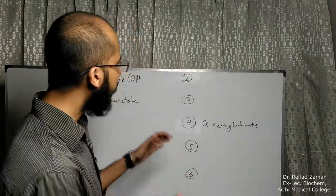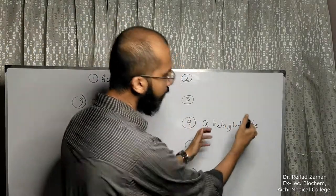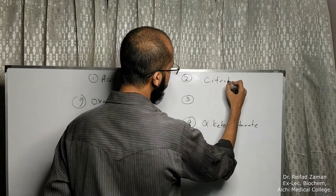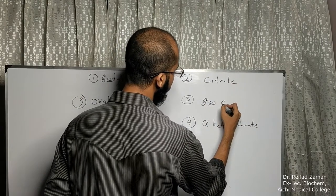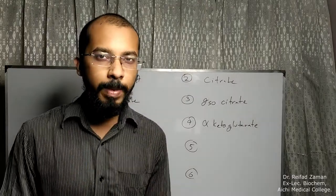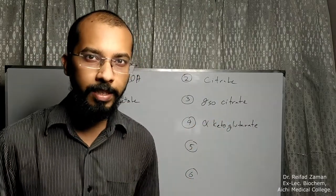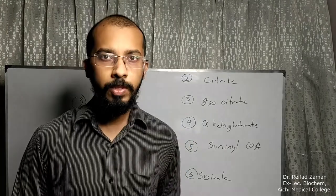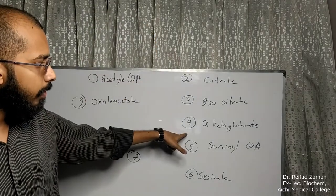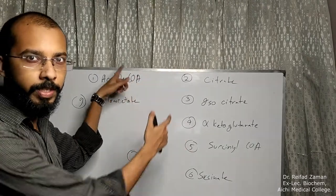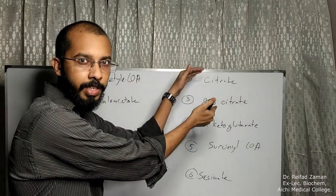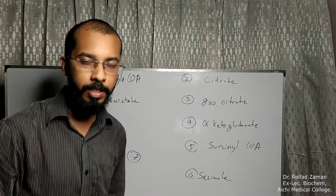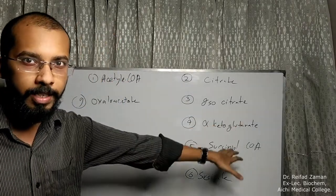So what about the rest? Well, in between the acetyl-CoA and alpha-ketoglutarate there are two citrates: the normal citrate and the isocitrate. And after alpha-ketoglutarate there are two success stories: the succinyl-CoA and the succinate. So let's review once again: number one acetyl-CoA, number four alpha-ketoglutarate. In between there are two citrates — number two citrate, number three isocitrate. And after alpha-ketoglutarate there are two success stories: succinyl-CoA and succinate.